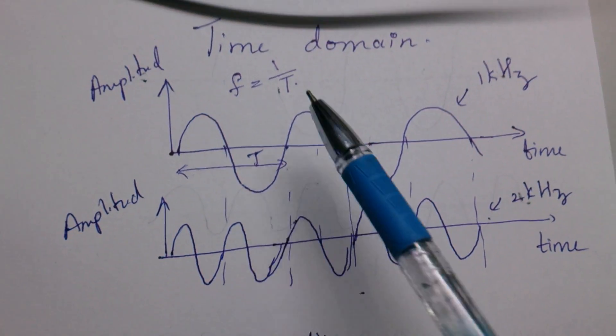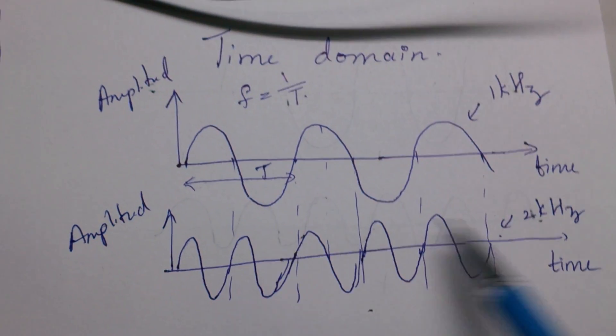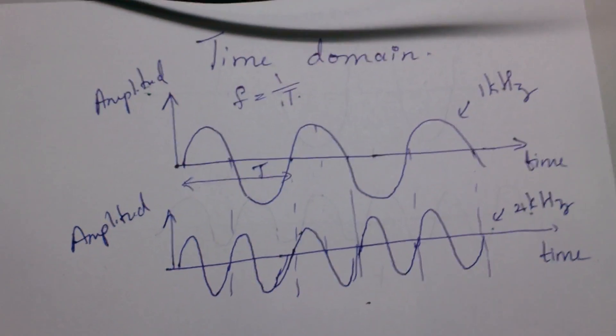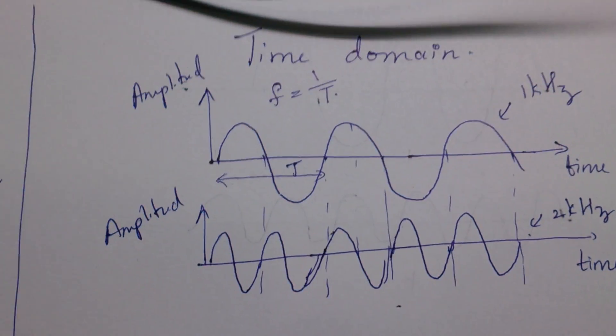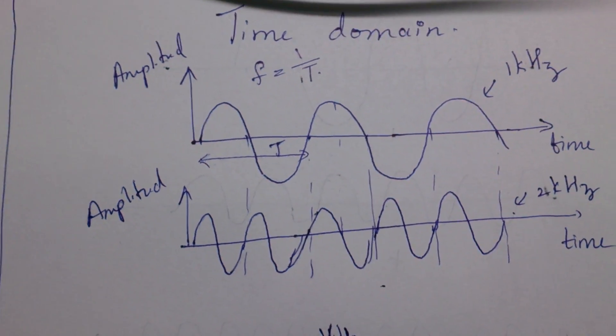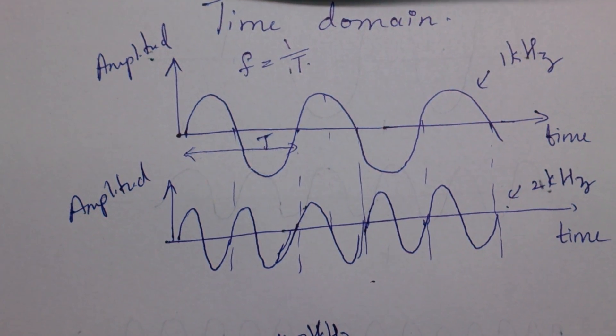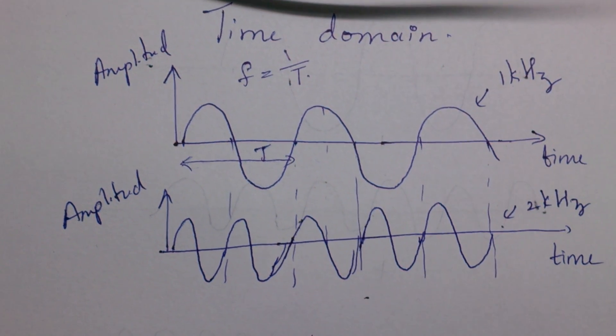In time domain we simply plot amplitude versus time, that's it, nothing else. But now the problem starts when it comes to frequency domain. Many people do face problems with frequency domain like they don't understand why we need frequency domain.